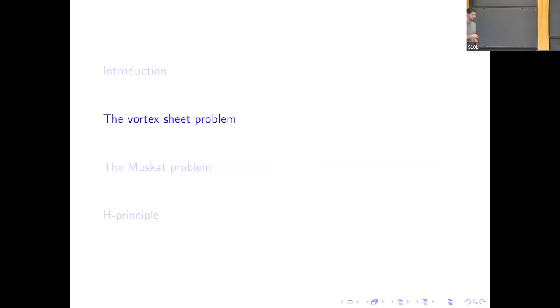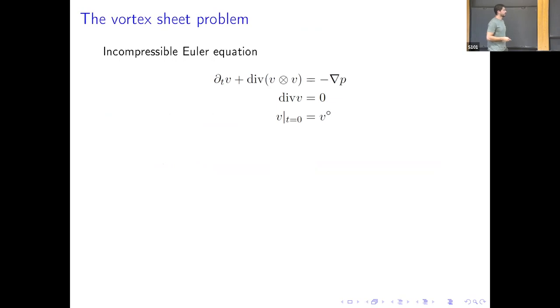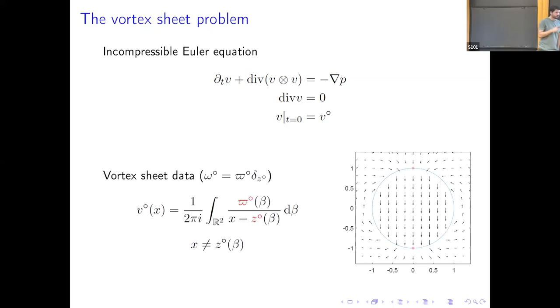Now, let us come back to the Kelvin-Helmholtz instability. In this case, we have the incompressible Euler equation, and the Navier-Stokes without viscosity. We have a constant density. The first row is the conservation of momentum and the pressure. The incompressibility, and we consider that the vorticity initially is concentrated on a current curve with certain vorticity density. In this case, this is called the vortex sheet, and the velocity field is recovered by the Biot-Savart law.